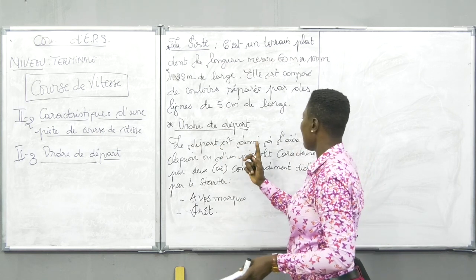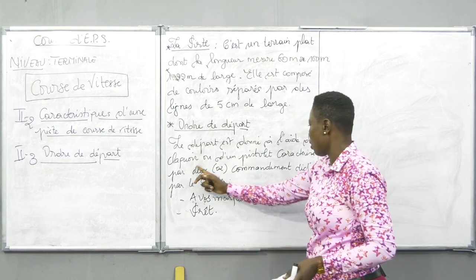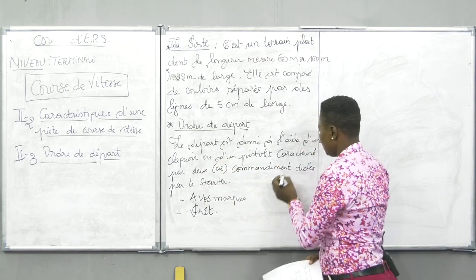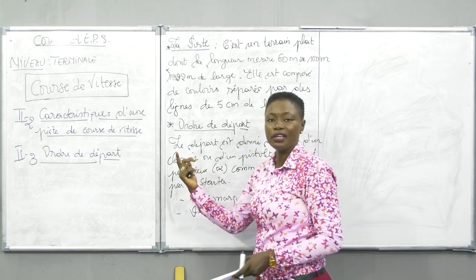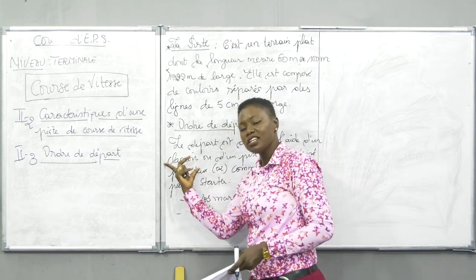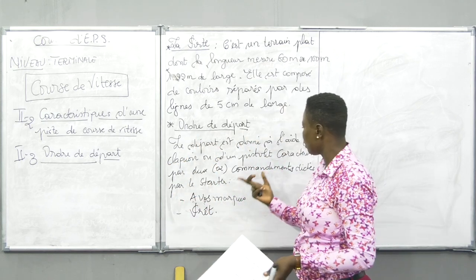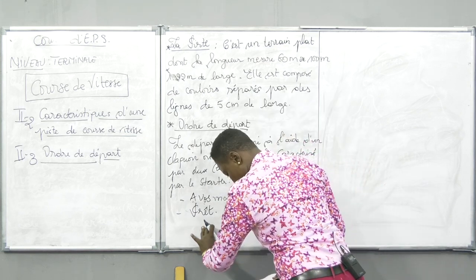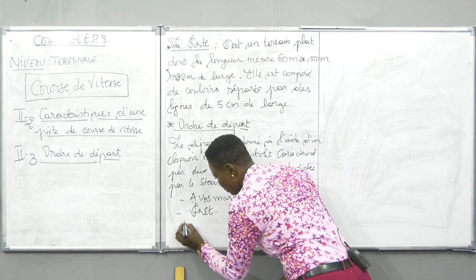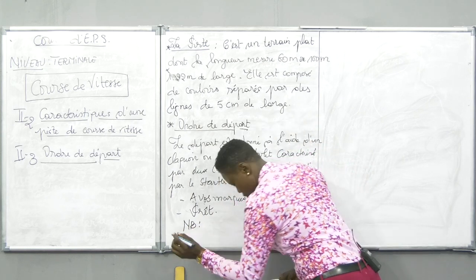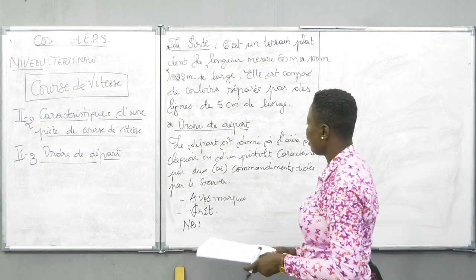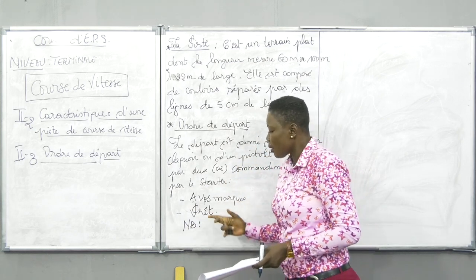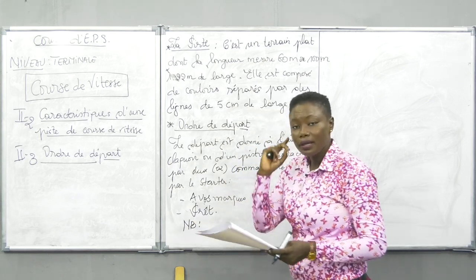Quand on dit que le départ est donné à l'aide d'un claquoir ou d'un pistolet de commandement, c'est tout simplement parce qu'au niveau de l'école, on utilise le claquoir. Mais au niveau international, dans les grandes compétitions, c'est un pistolet. Les commandements sont à vos marques et prêts. Mais le T n'est que le signal qui produit soit le claquoir, soit le pistolet.